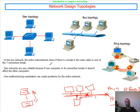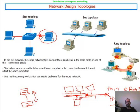The star topology consists of a couple of computers plugged into the same switch, each with its own port, forming the star topology. The benefit is that whenever there is a break in a wire, it only affects that one computer. You can just replace the wiring or the PC itself, and nothing else is affected.